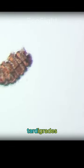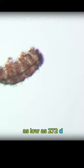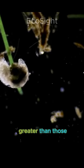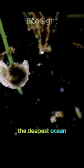They can survive extreme conditions that would be fatal to most other forms of life. Tardigrades can endure temperatures as low as -270°C and as high as 150°C, and pressures six times greater than those found in the deepest ocean trenches.